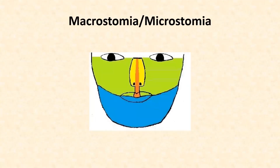Next are macrostomia and microstomia. The green portion in the figure represents the area formed by the maxillary process, while the blue portion represents the area formed by the mandibular process. Inadequate fusion of the maxillary and mandibular processes may lead to an abnormally wide mouth — macrostomia — or a small mouth — microstomia.